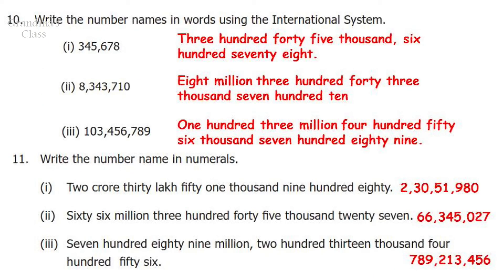Question 10: Write the number names in words using the international system. The first number can be written as 345,678. The second number can be written as 8,343,710. And the third one can be written as 103,456,789.